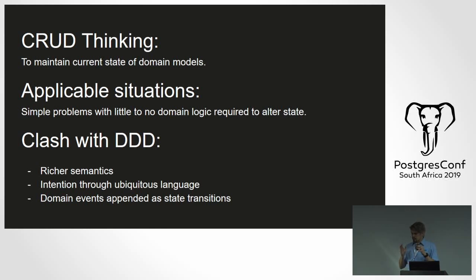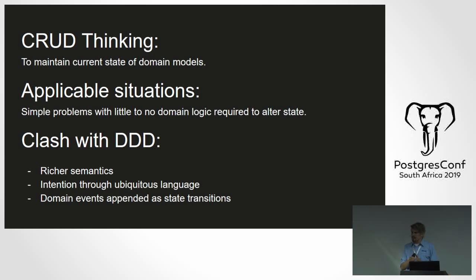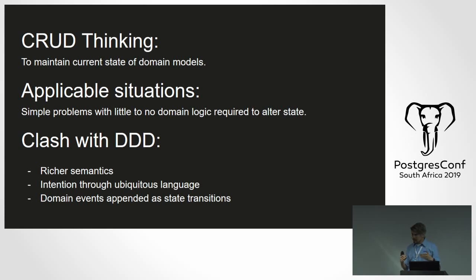CRUD thinking is the default for most of us — thinking in tables, updating rows and columns. We have history tables, but they don't really capture intent as well as event sourcing does. A history table captures some revision of how a table was updated, but there are many ways to get to a certain state. CRUD thinking is more about maintaining current state, where the history or transition of state is secondary.